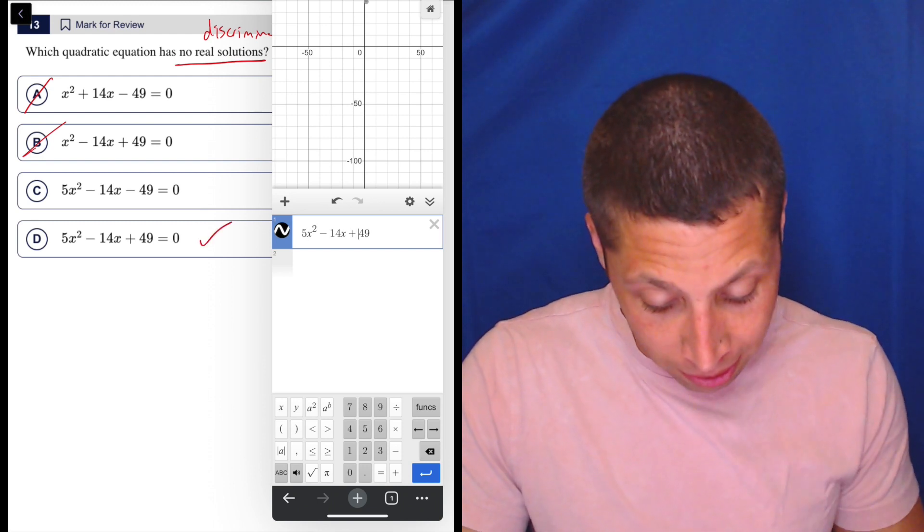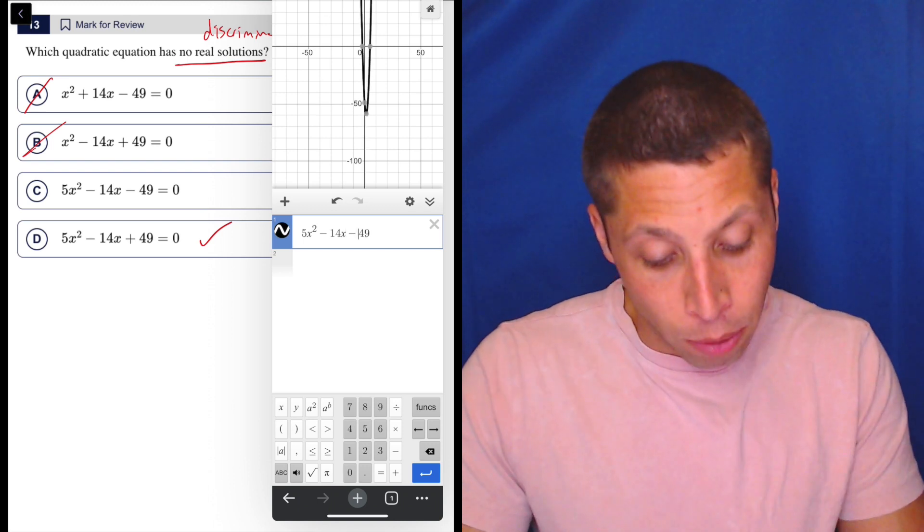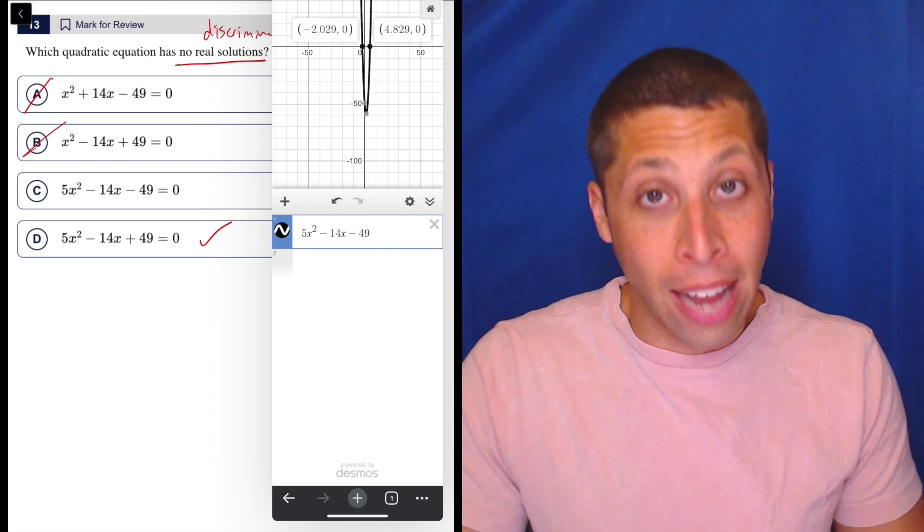But let's just double check c, we can make that a minus, and there you go. Two solutions because we have two x-intercepts. So that's it.